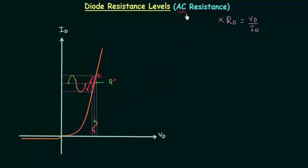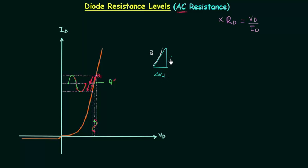Now we have to calculate the AC resistance. For this we will draw a straight line tangent to the curve through the operating point — this will define the voltage and current used to determine the AC resistance. I will redraw this region of the curve for better understanding. This is the operating point Q, and we draw a straight line tangent to the curve. This gives us delta Vd and delta Id, and the AC resistance Rd is equal to delta Vd by delta Id.